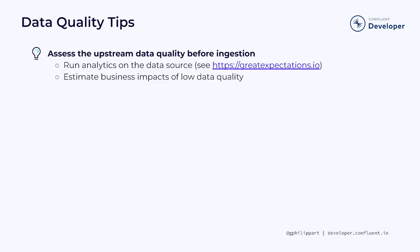Let's have a look at a few tips. Before you start ingesting data into your system, you should assess its quality — that is how complete, consistent, timely, accurate, precise, relevant, and valid it is. Try to estimate the impact that low data quality would have on your business. A good way to assess the quality with concrete numbers is to run analytics on the data source. For example, an email address is collected in 80% of the cases, but only two-thirds of the values seem to be valid entries. Is that sufficient for your business case?